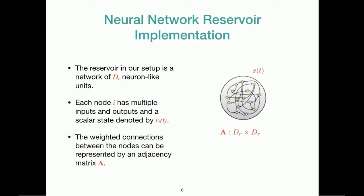In our setup the reservoir is a network of dr neuron-like units. Each node i in the network has multiple inputs and outputs and a scalar state which will be denoted by r sub i of t. So the state of the entire neural network will be denoted by this vector r of t. And the weighted connections between the nodes can be represented by an adjacency matrix A. So the element of this matrix Aij will denote the strength of the connection between node i and node j. This is a directed adjacency matrix of size dr by dr.